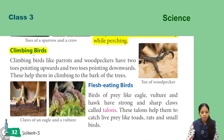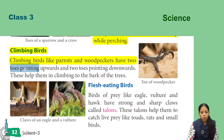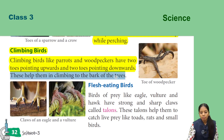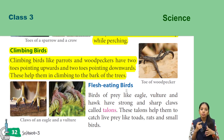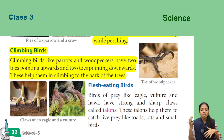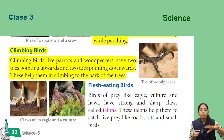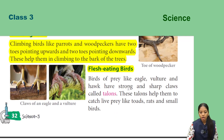Next, climbing birds. Climbing birds like parrots and woodpeckers have two toes pointing upwards and two toes pointing downwards. These help them in climbing the bark of trees.